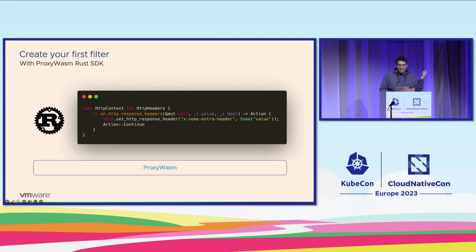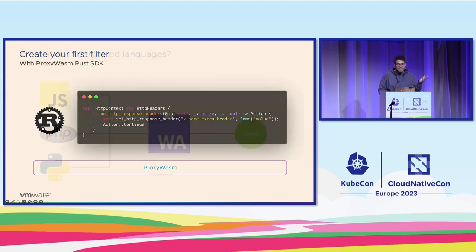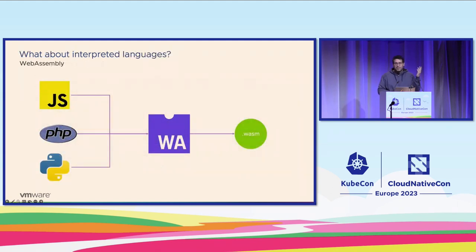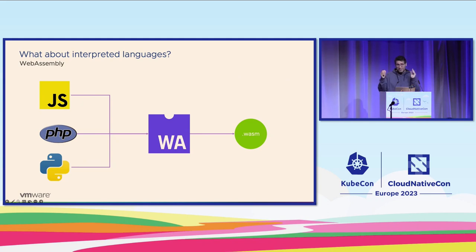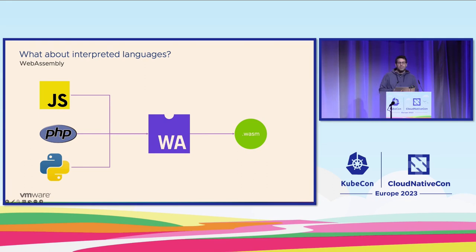We have seen that all the programs and languages we have been talking about are compiled. So what about interpreted languages? This is exactly what our experiment has been about. We have JavaScript and we have PHP — and Python could be added as well. The examples we are going to show today are specifically about JavaScript and PHP.